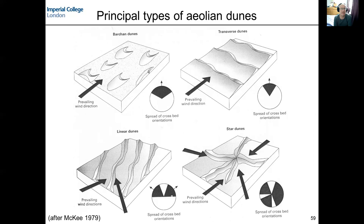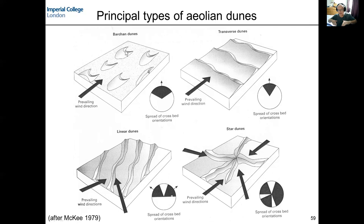There are four main categories of aeolian dune geometry. The first type - top left - are Barchan dunes. They have a crescent shape and the tips of the crescents point in the downwind direction. These are discontinuous laterally and record one wind direction. If you measure a paleocurrent based on the dip of the downwind side of those dunes, you get a range of orientations in a rose diagram clustering around the mean in the prevailing wind direction. These will be expressed essentially as trough cross beds.